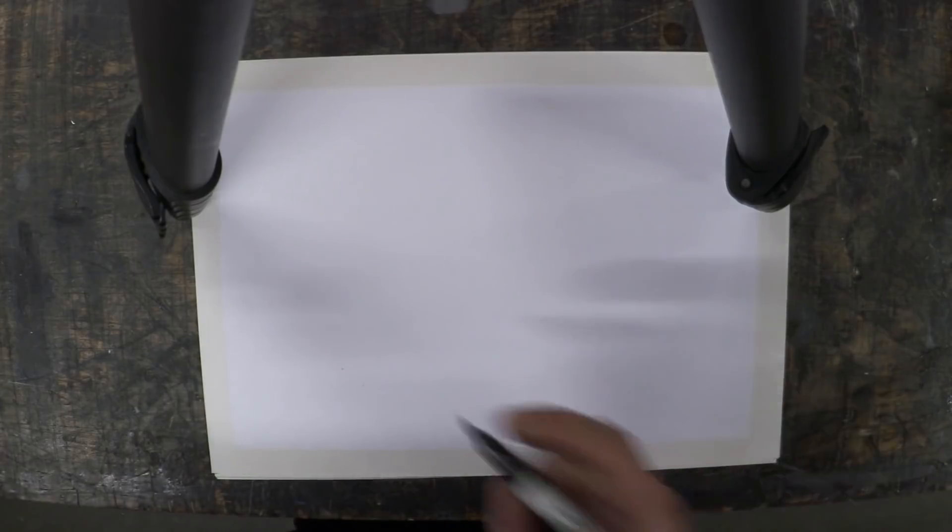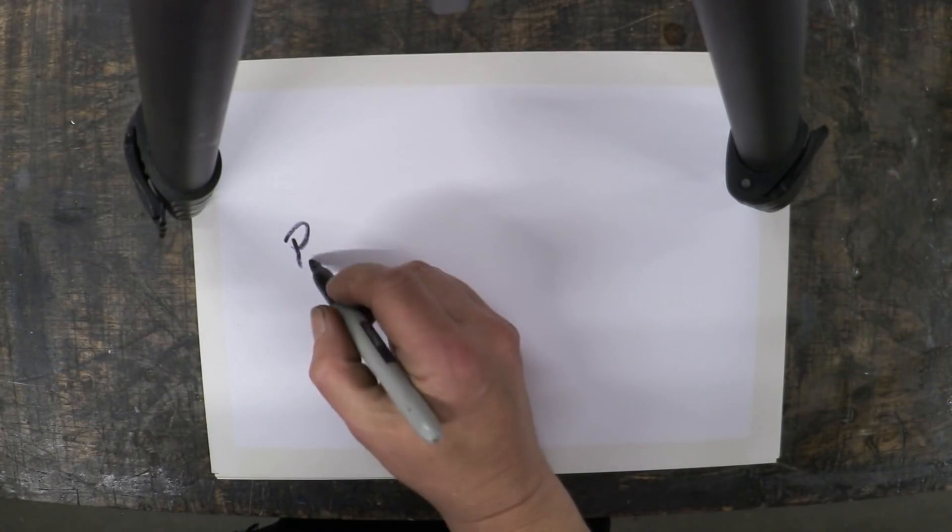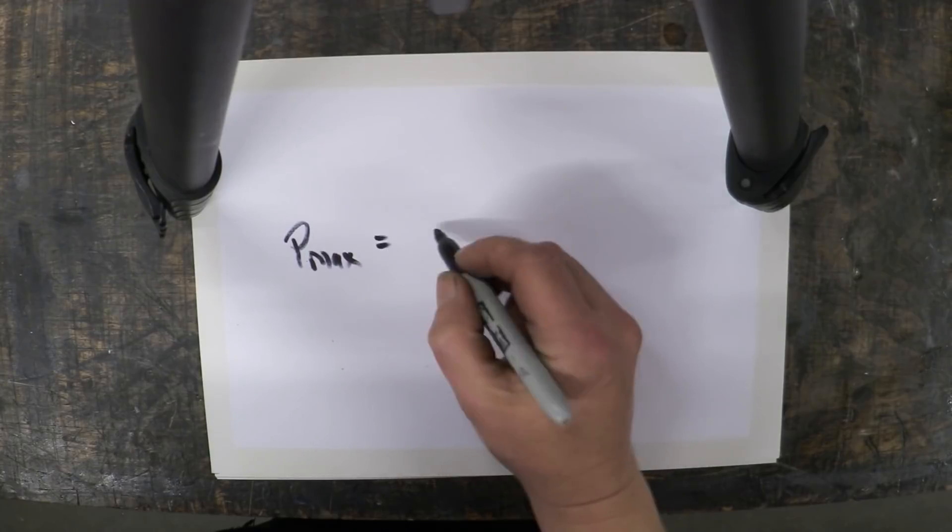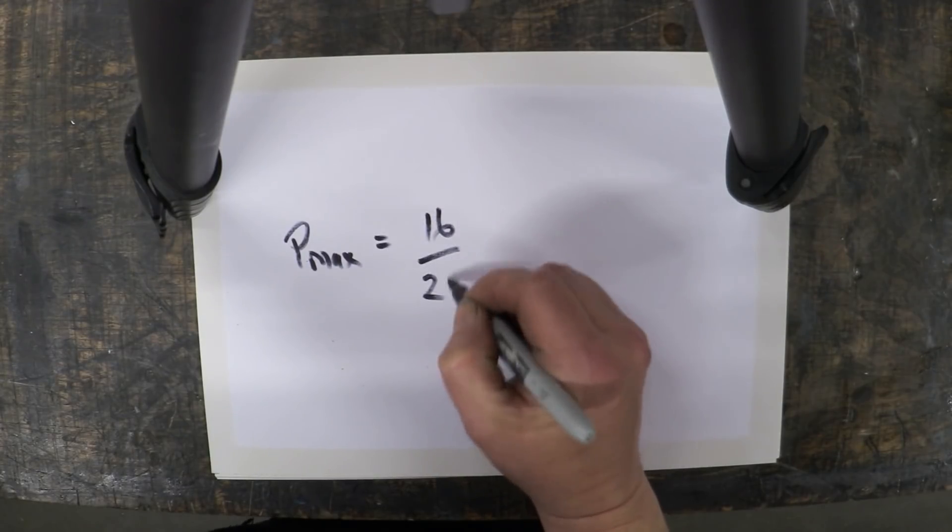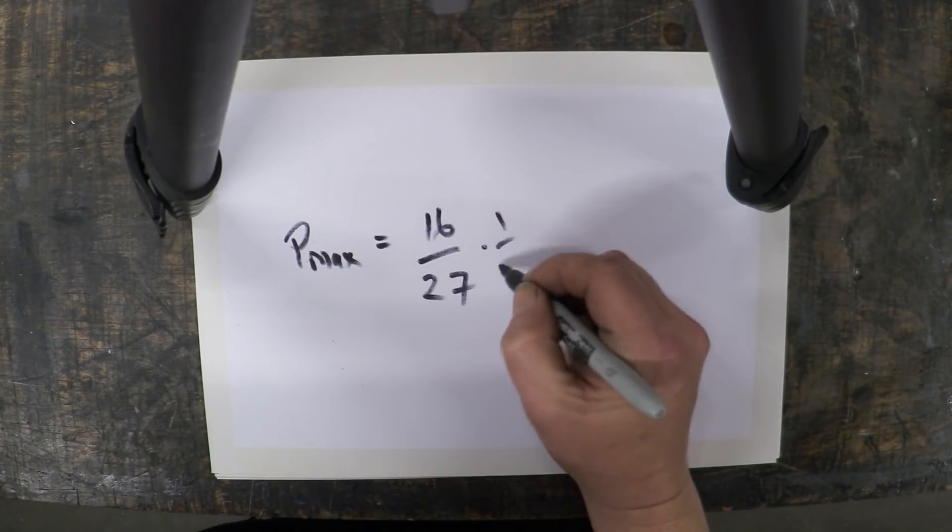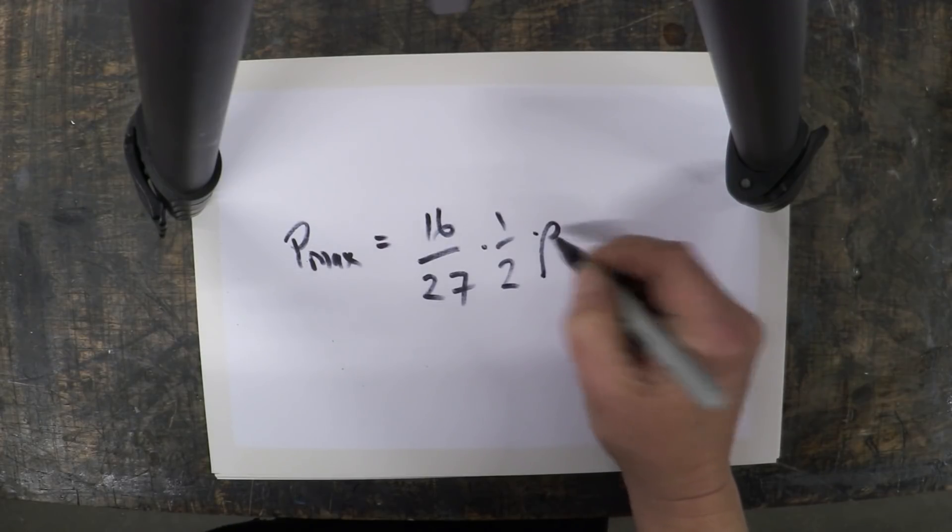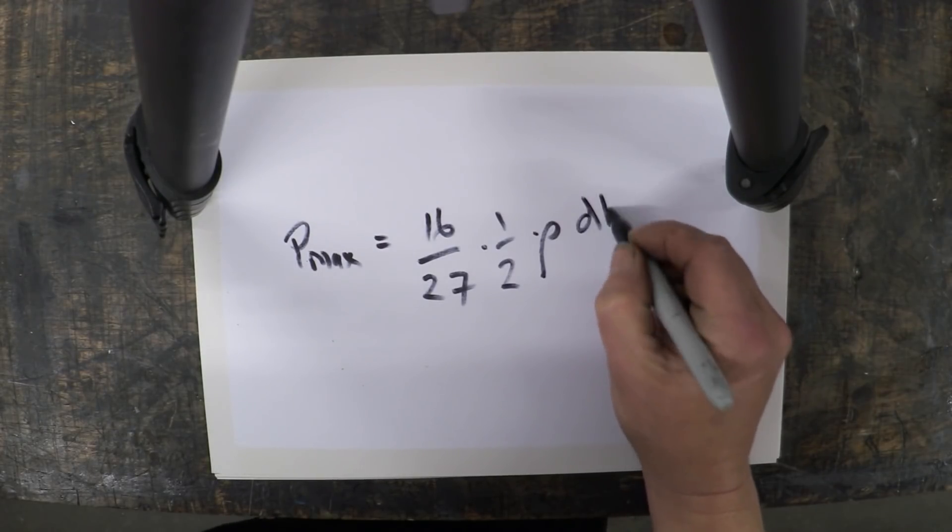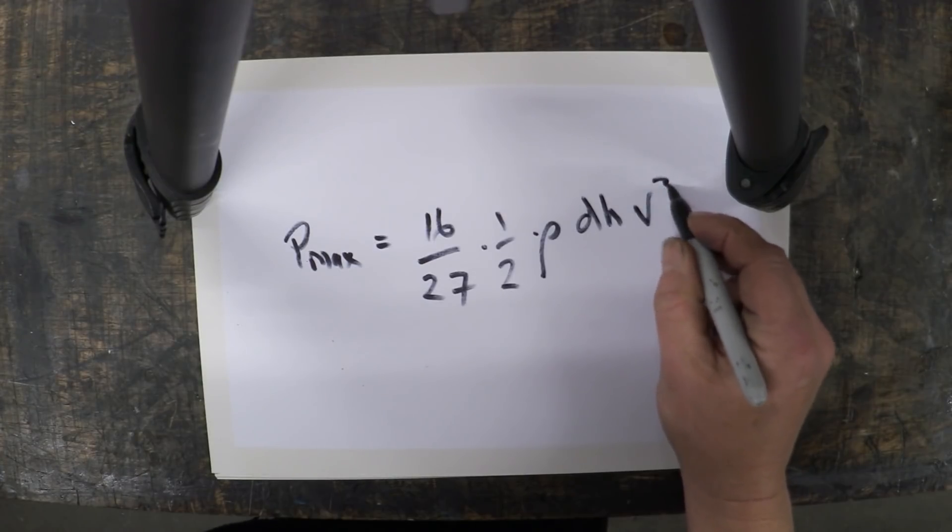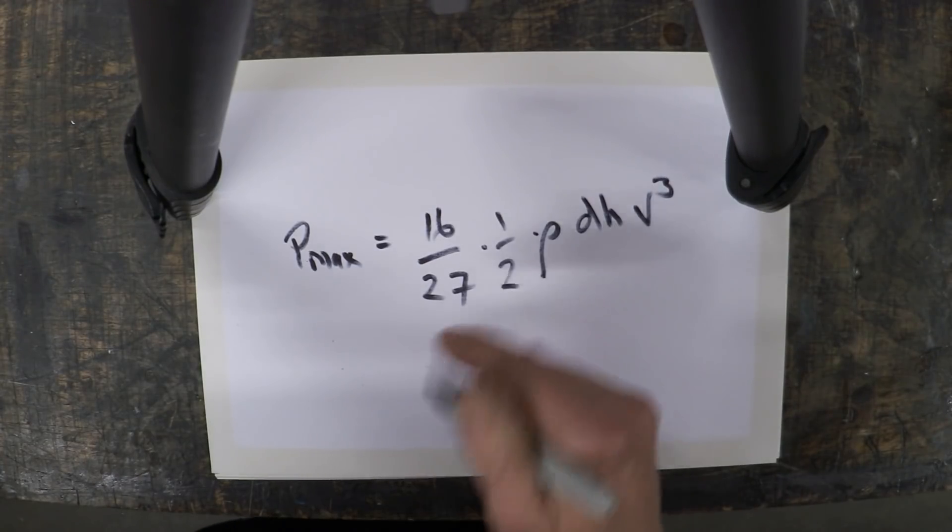So the first question you have to have really is is it possible, can this actually be done. Let me give you a look at what Betz law actually looks like. So what it comes down to actually is this: that the maximum power, Pmax, is equal to 16 over 27 times a half times rho d h v cubed. This bit here is the Betz factor.